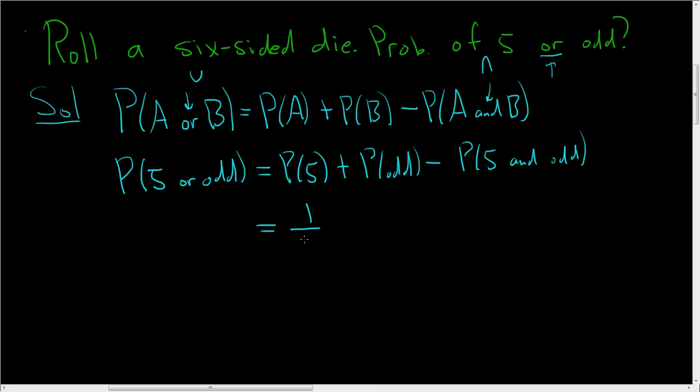There's one way for the die to land on five, and there's six ways to roll the die, or there's six ways for the die to land. So that's the probability of rolling a five.